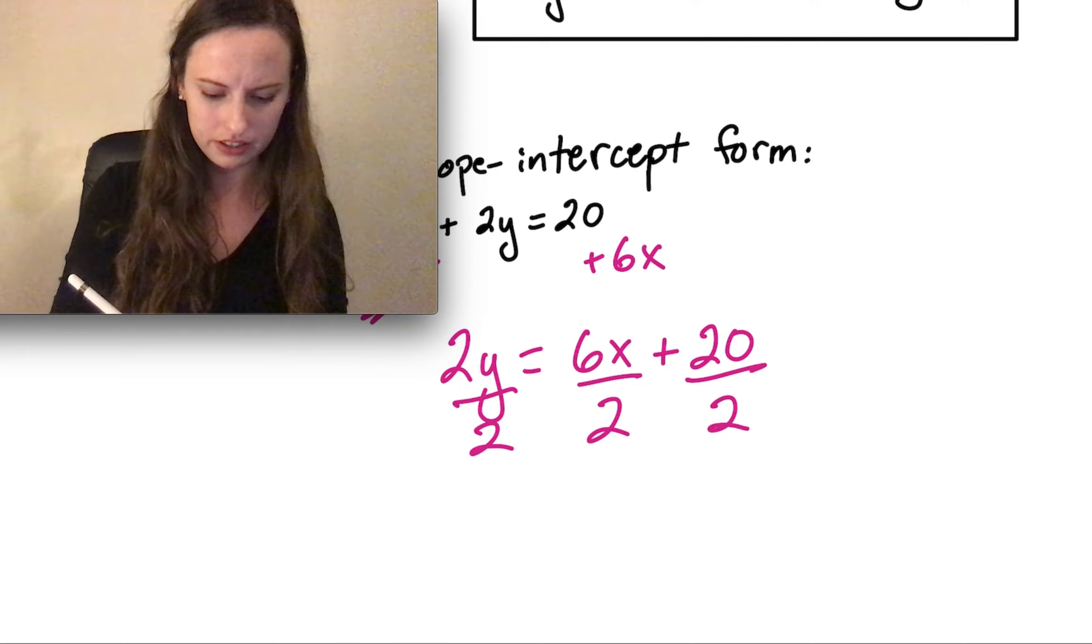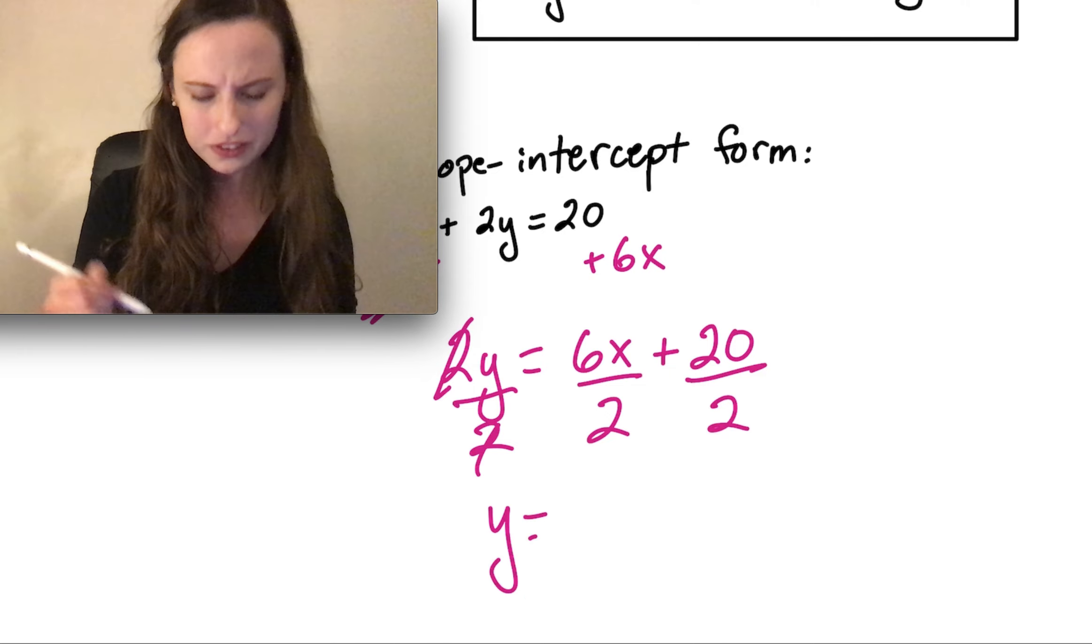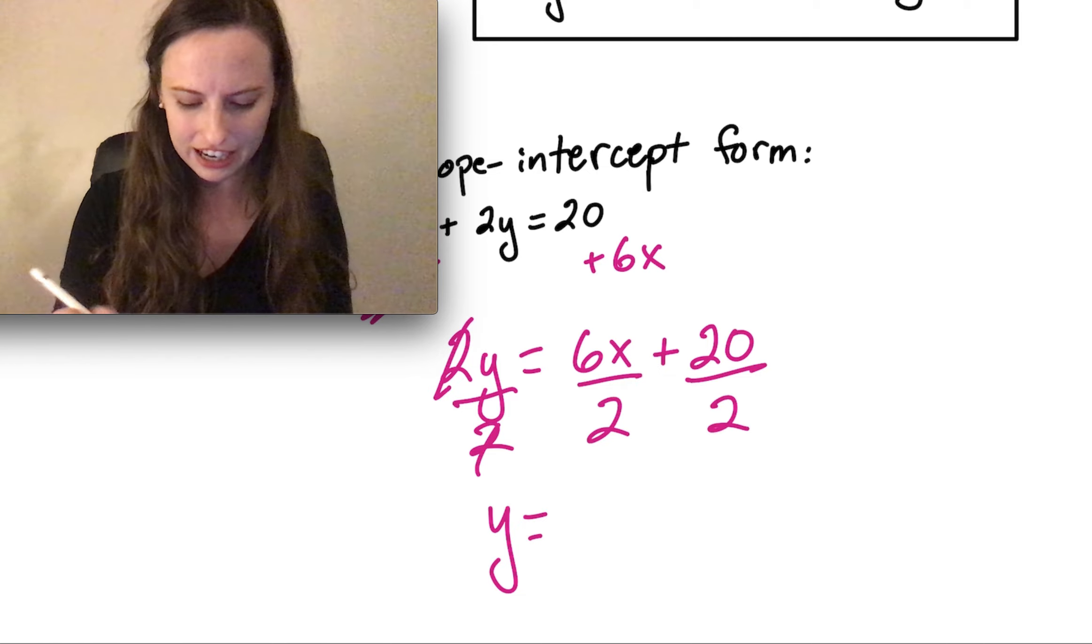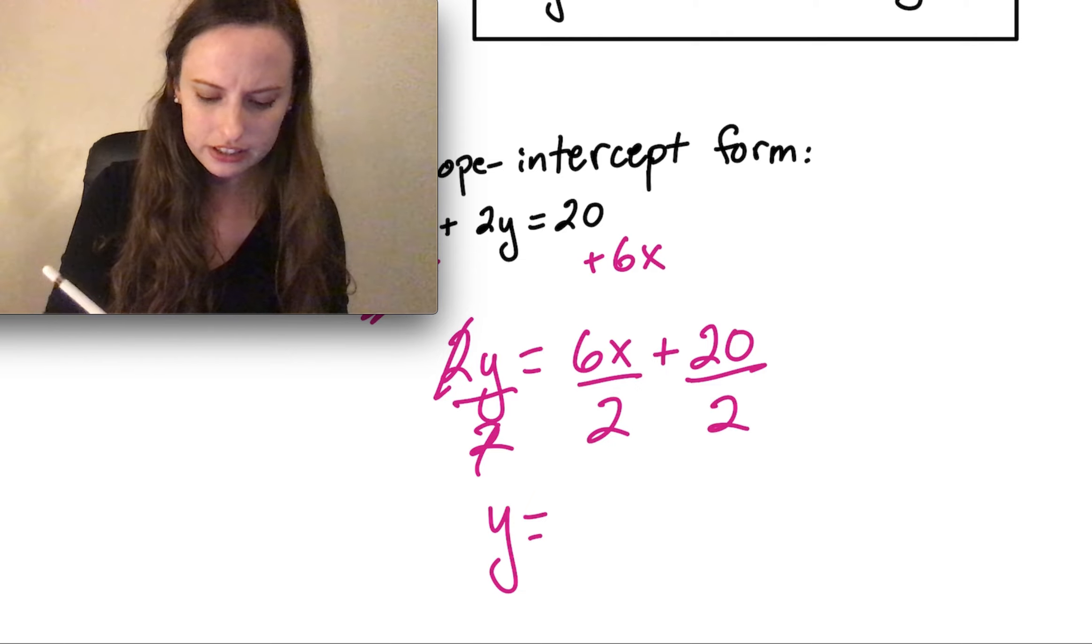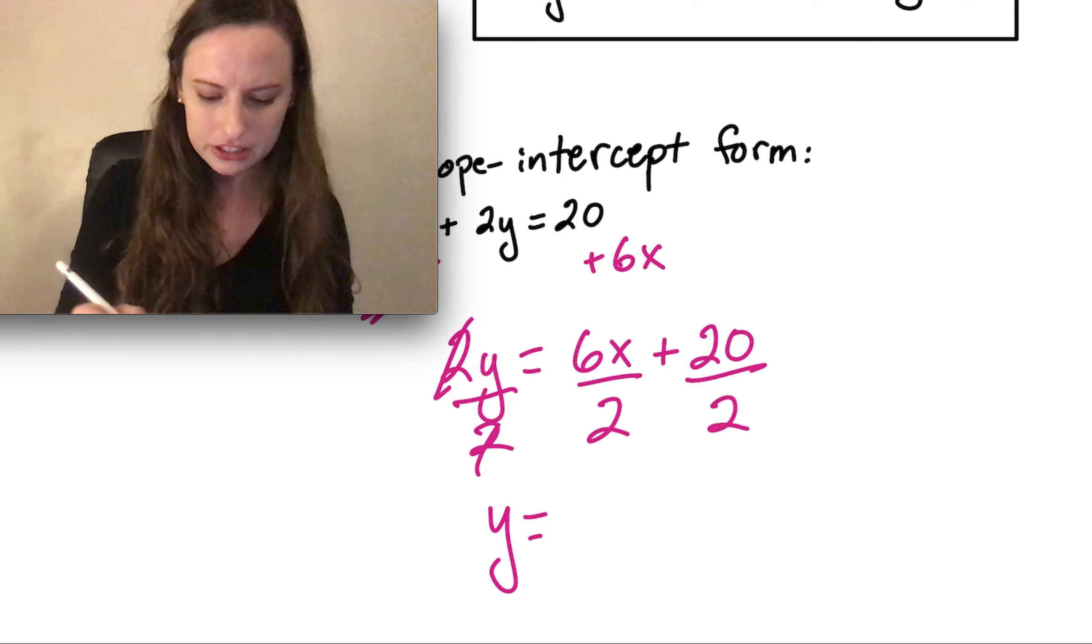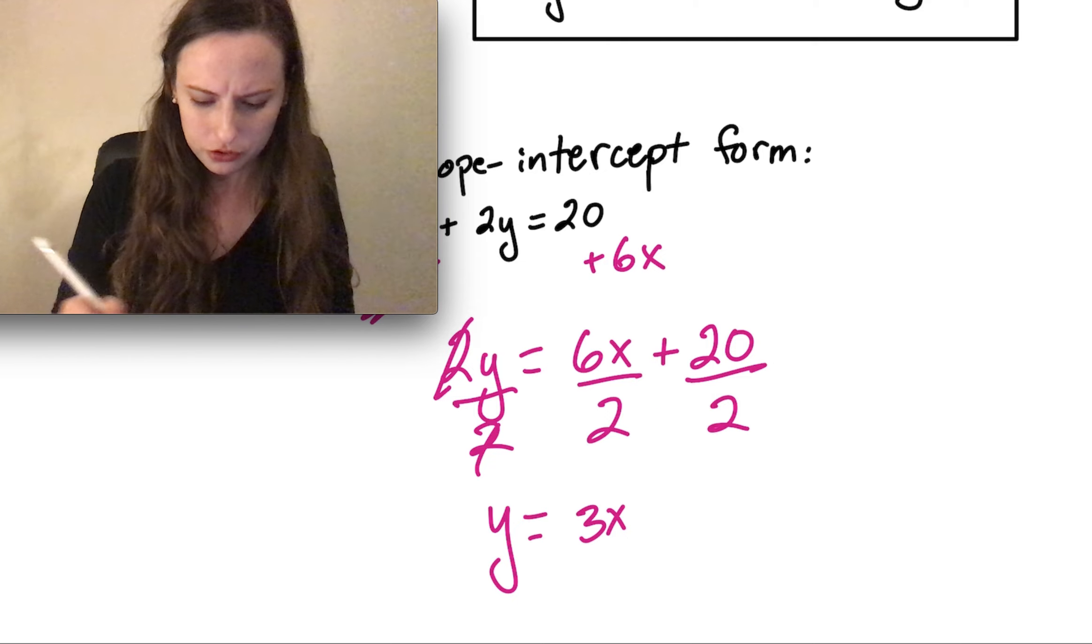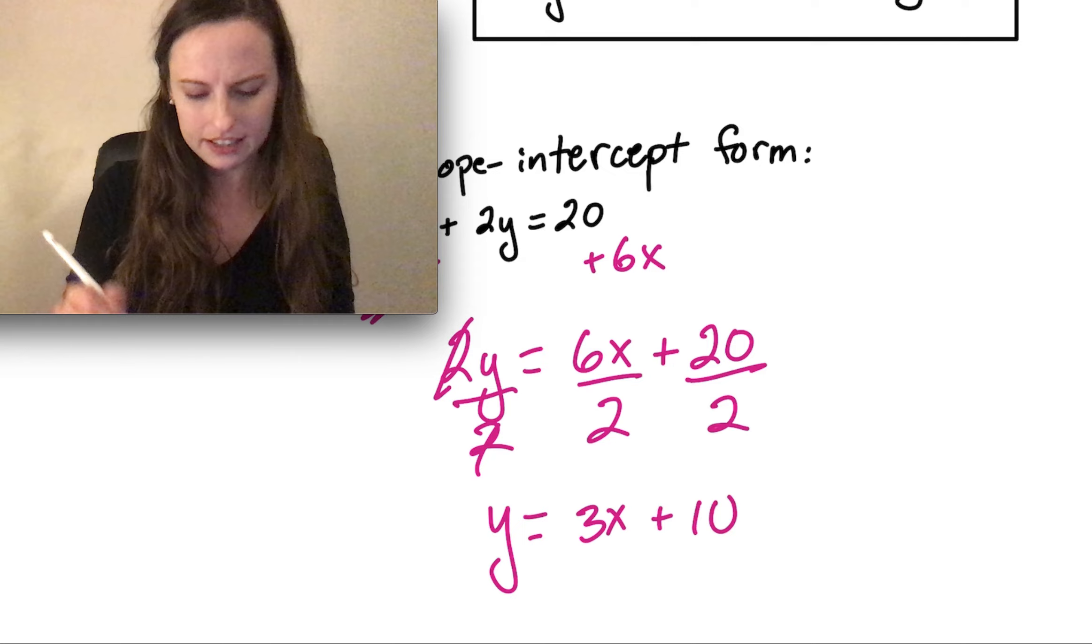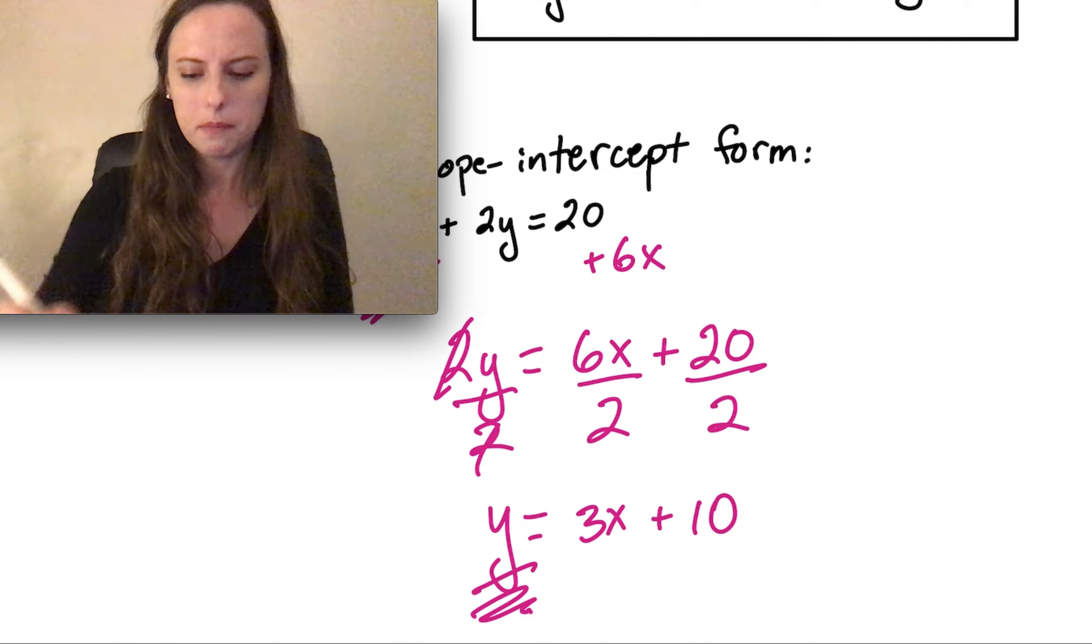The 2s cancel out here. Now we're left with y equals. Now I'm just going to simplify each of these terms. 6x over 2, I'm just going to focus on the numbers here. 6 divided by 2 is 3, so that simplifies to 3, and then the x comes along with it. 20 divided by 2 is 10. So we have 3x plus 10. That's our final answer because we got y by itself.